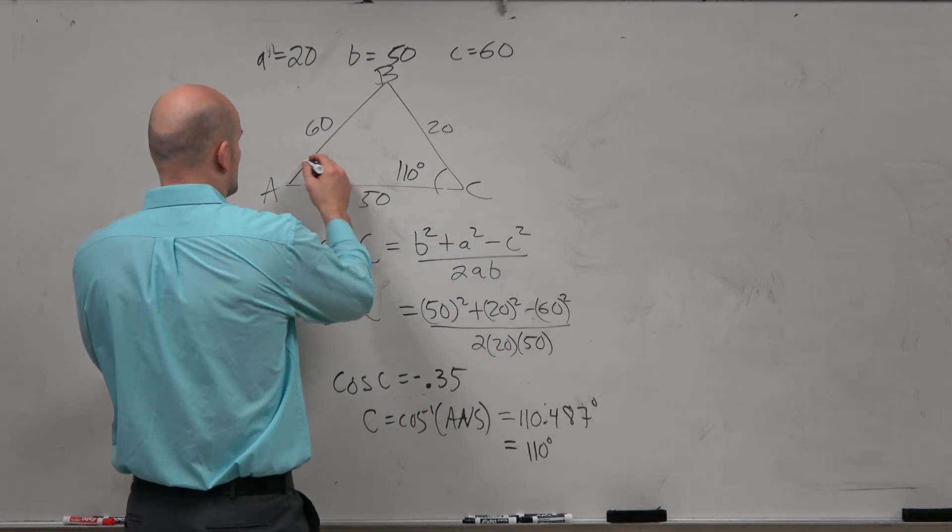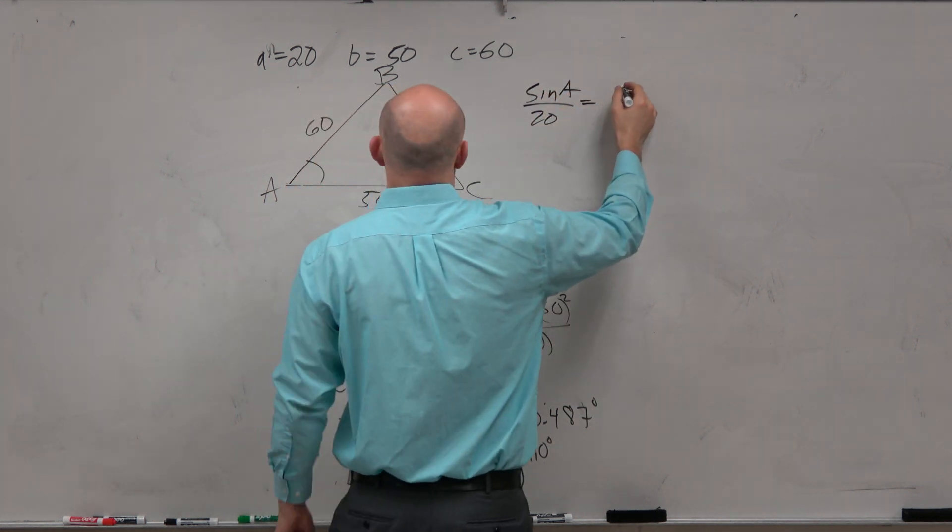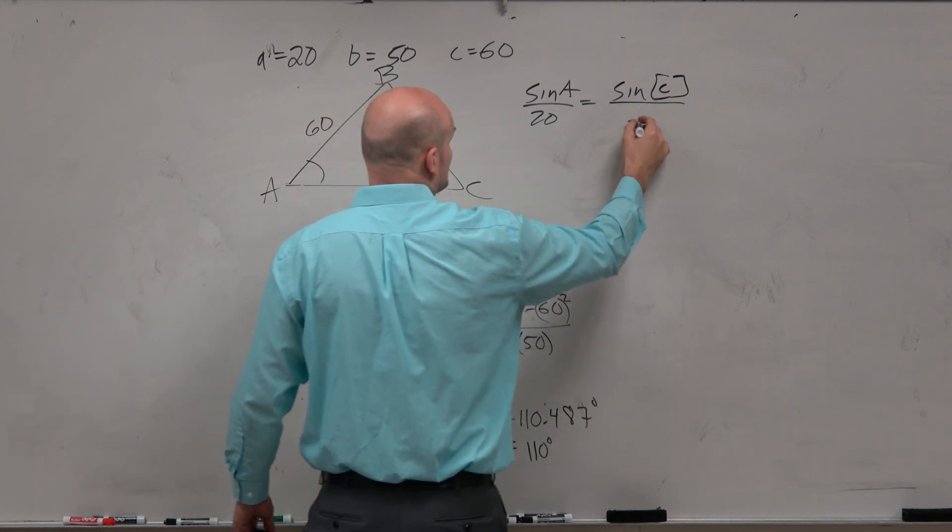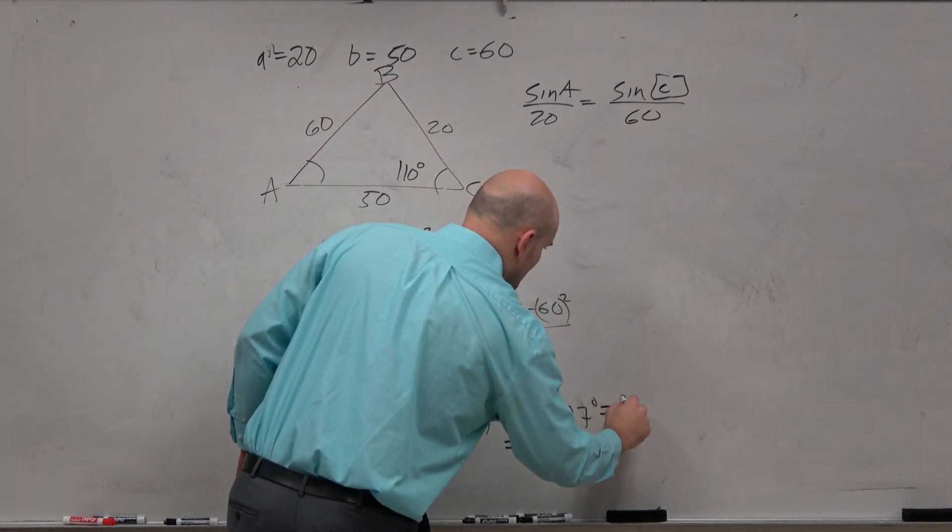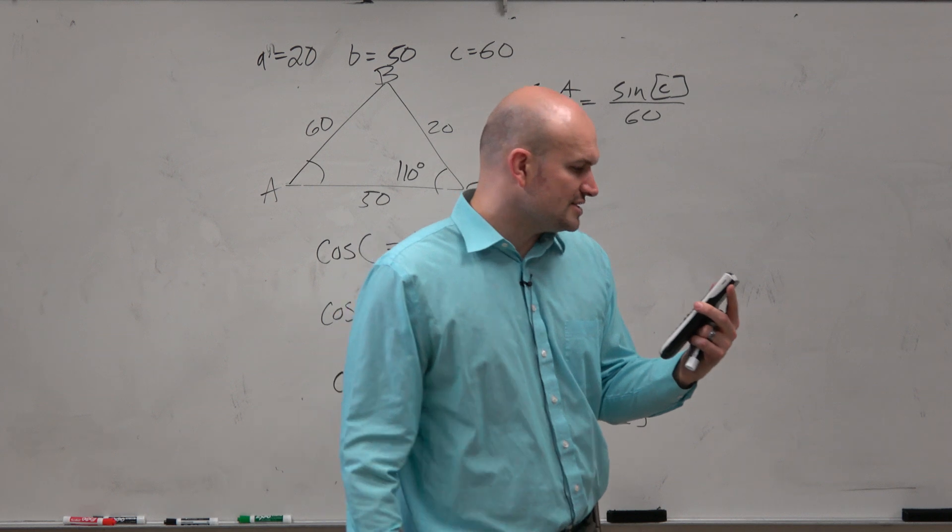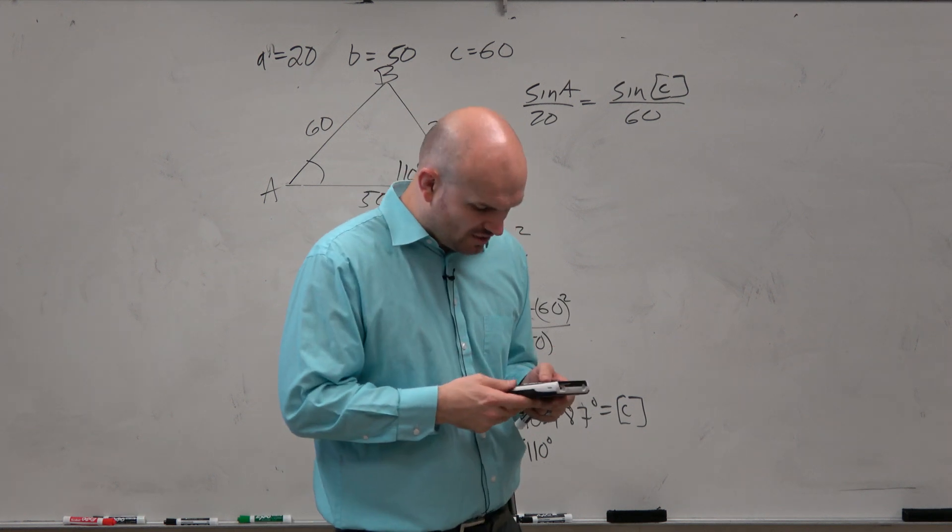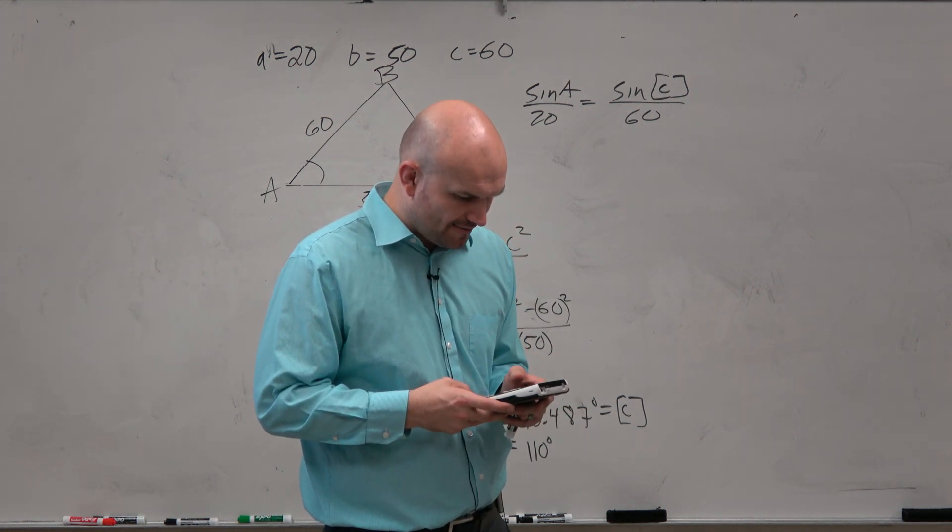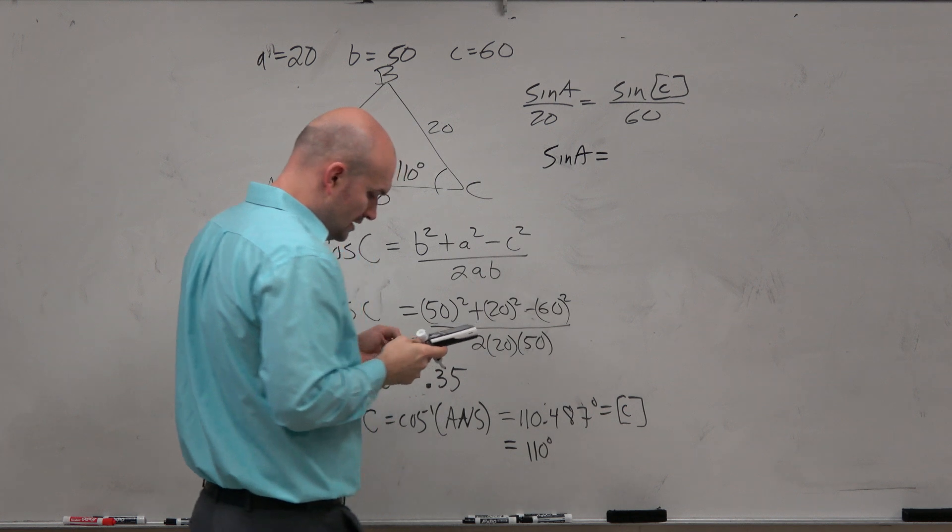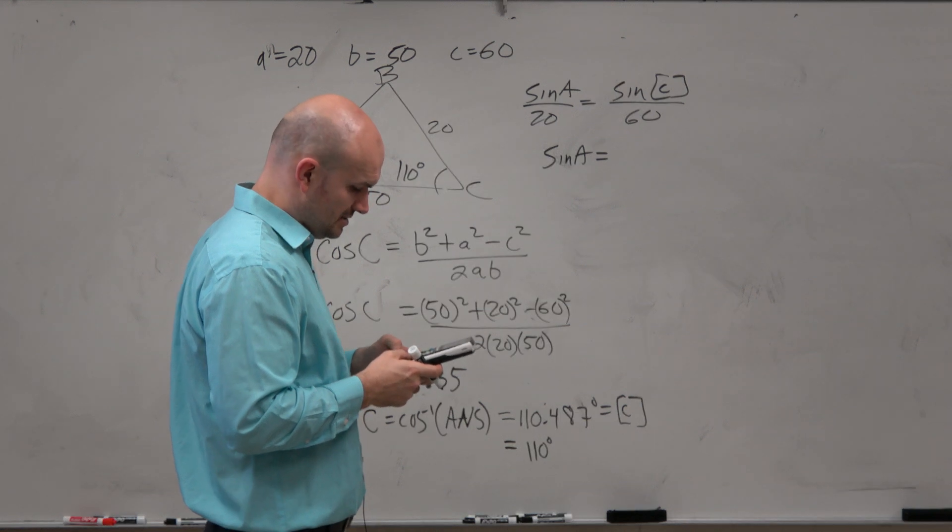So now, I can say which one you want to solve, let's do A. So I'll do sine of A over 20 equals the sine of 110? No. Do not use 110. Why should we not use 110? Because it's rounded. Don't use rounded answers. We only round at the end. So that means this answer, 110.4873151, I should store that. Since that's angle C, I'll store it as angle C. Then I'll do 20 times the sine of alpha C divided by 60.